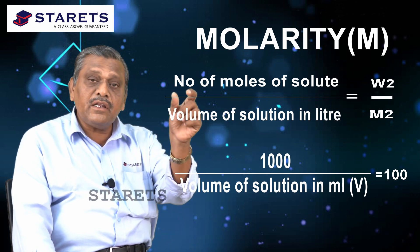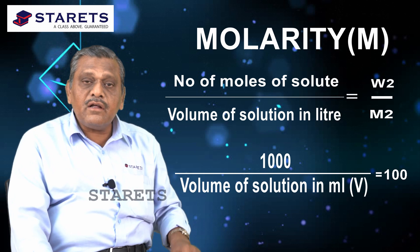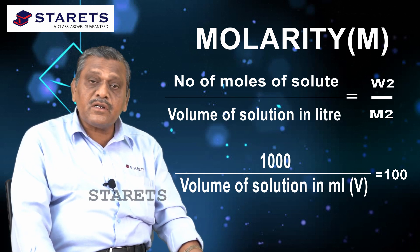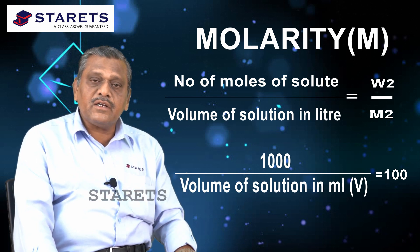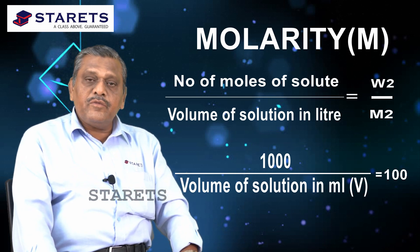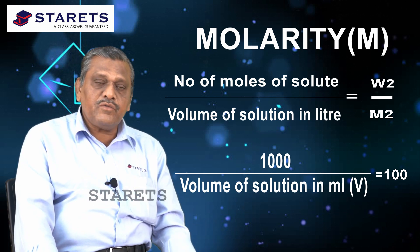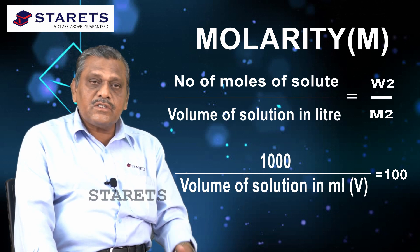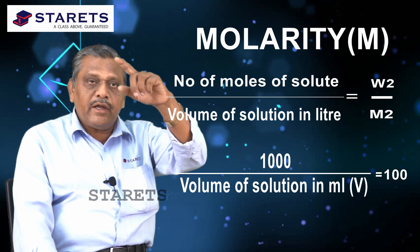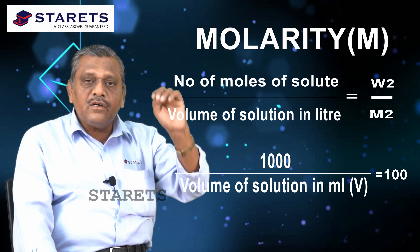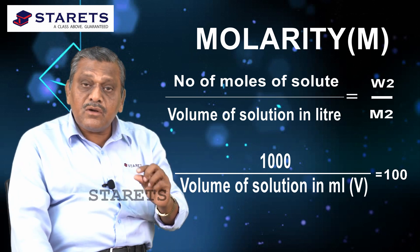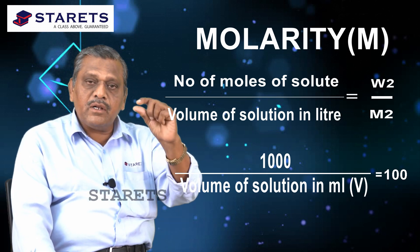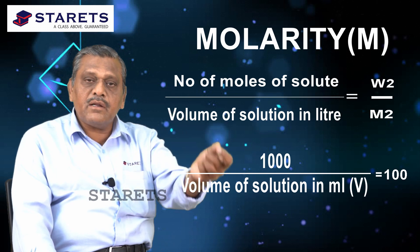V liters of solution contains N2 moles, so 1 liter contains the molarity. Normally we do not prepare 1 liter; we prepare only a few ml — 100 ml, 200 ml, or 500 ml. There are instruments known as standard measuring flasks which have a specified volume, with marks at 500 ml, 100 ml, 50 ml, 25 ml, 10 ml, 5 ml, 2 ml, and 1 ml.